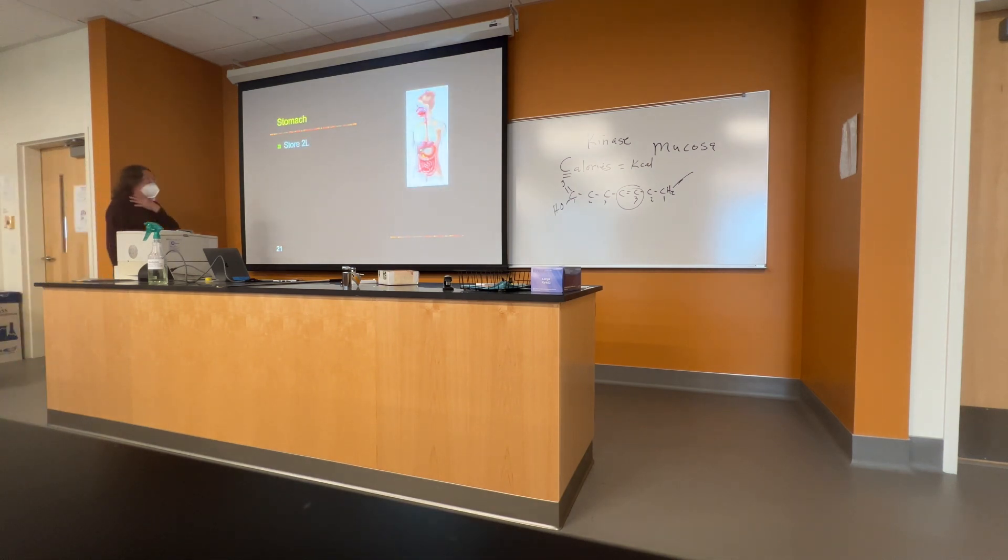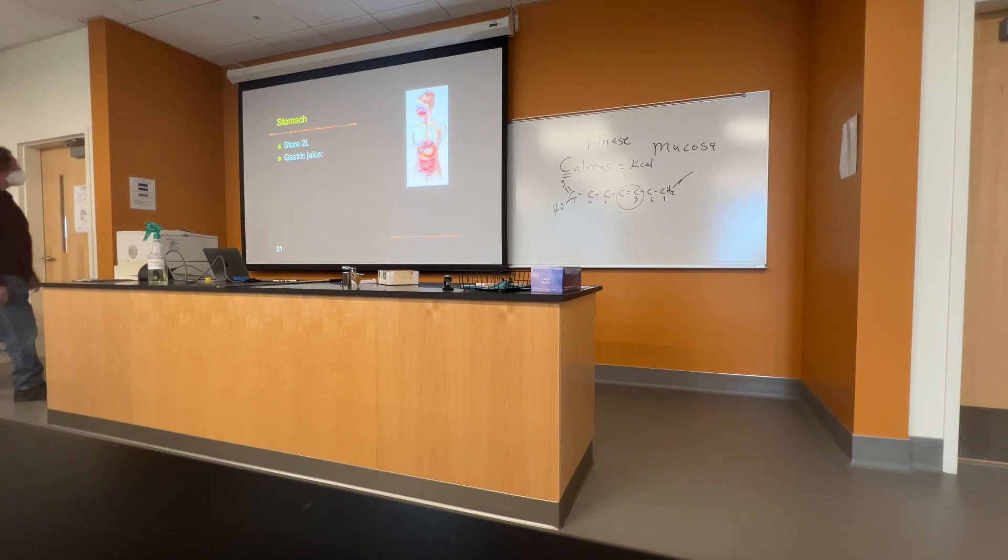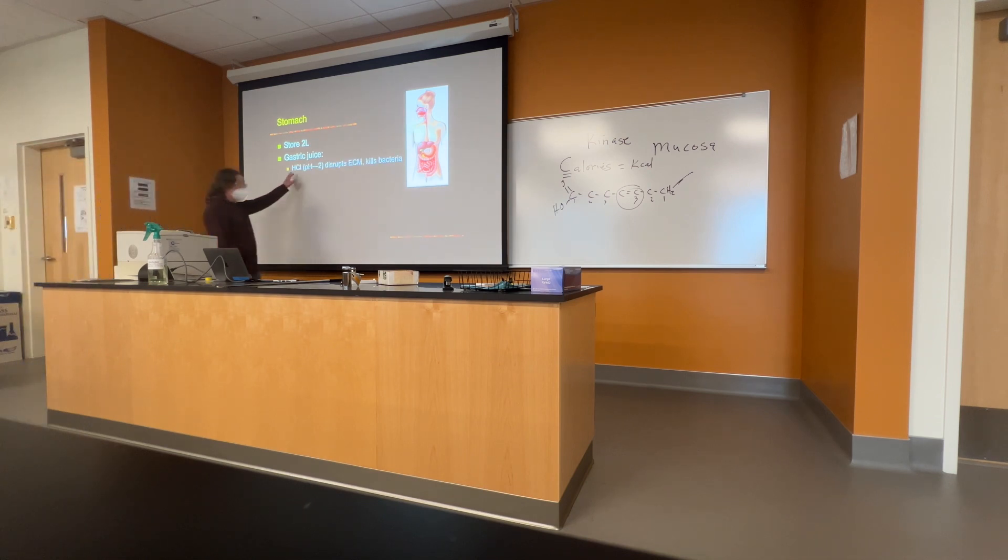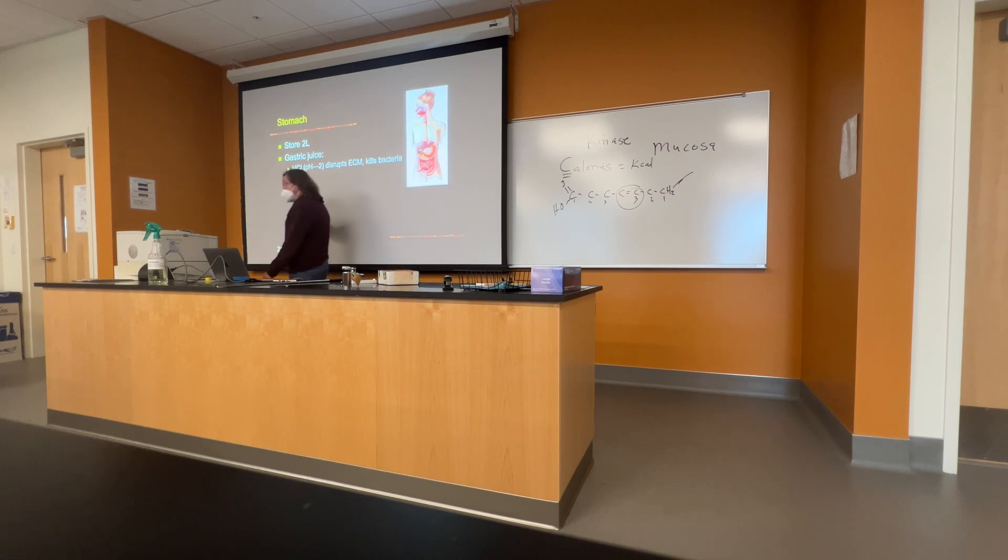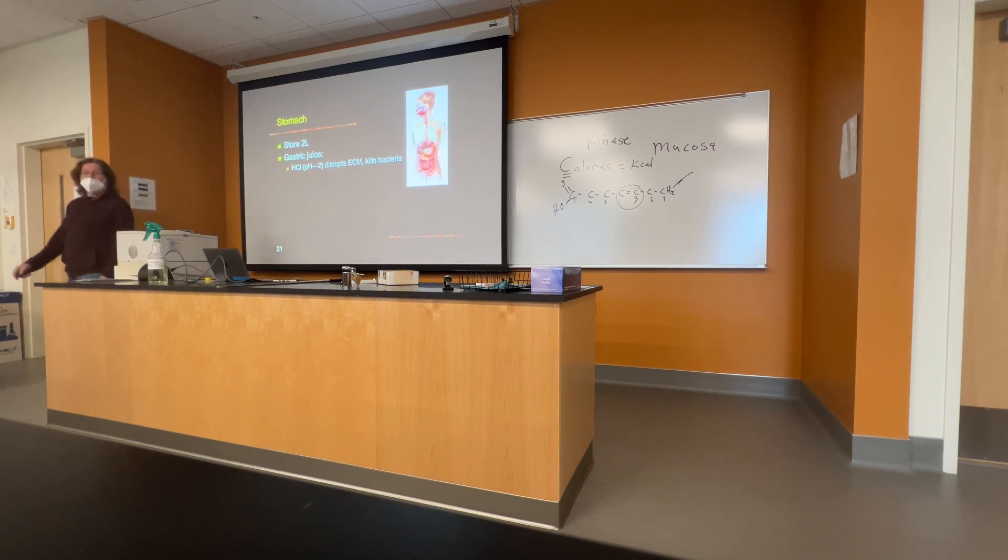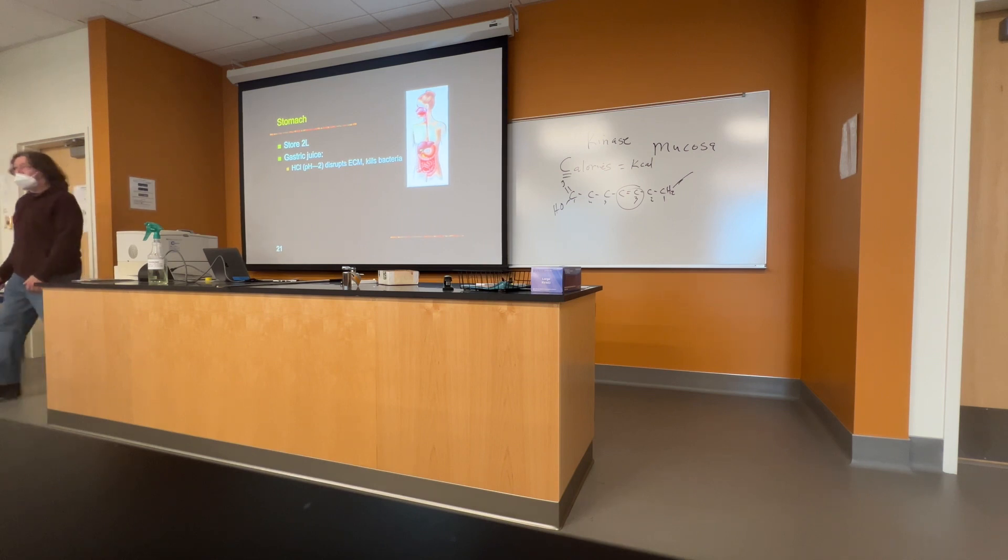In the stomach on average for a human this can store, it's stretchable, it can store up to two liters of material and the cells the epithelial cells they produce what is called gastric juice which includes cells that secrete hydrochloric acid that brings the pH down here to about 2 so the pH in the stomach very acidic and this here acid hydrolysis of extracellular matrix in the food connected tissue breaks down the matrix also most bacteria do not survive in an acidic environment some can but most of them are killed this is one of the functions here.